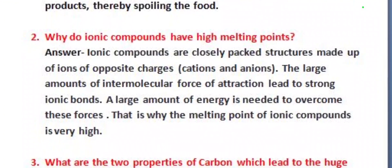Our next question is, why do ionic compounds have high melting points? Its answer is: ionic compounds are closely packed structures made up of ions of opposite charges — cations and anions. The large amount of intermolecular force of attraction leads to strong ionic bonds. A large amount of energy is needed to overcome these forces. That is why the melting point of ionic compounds is very high.